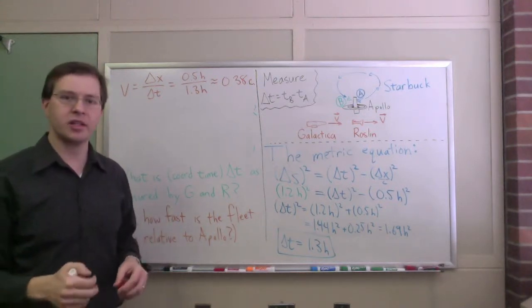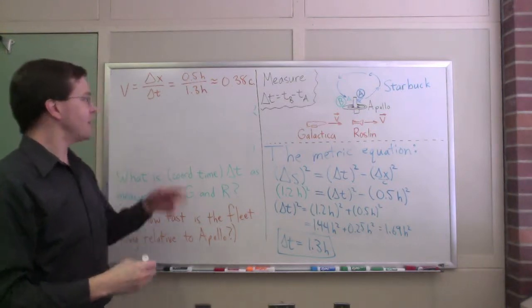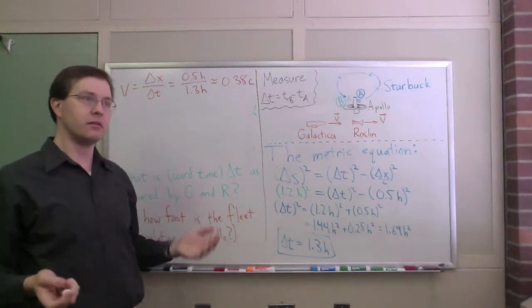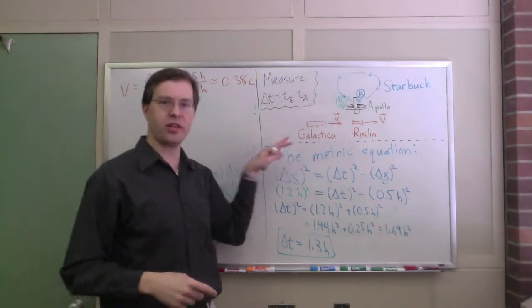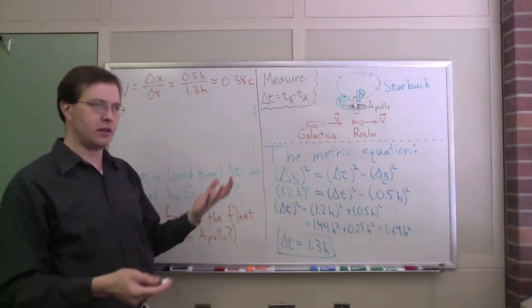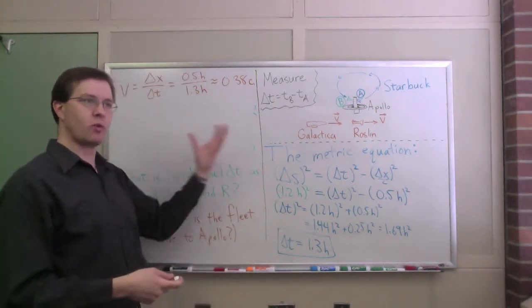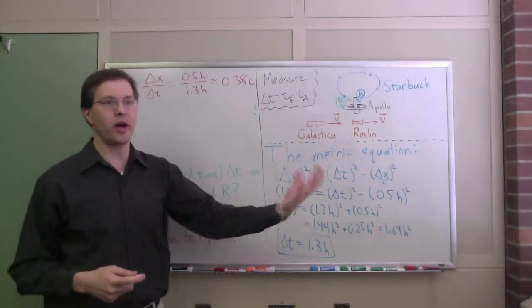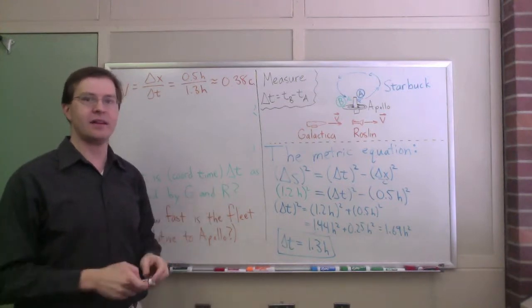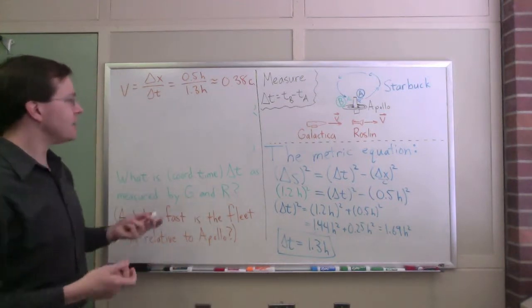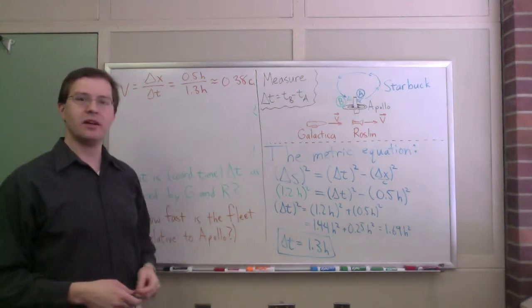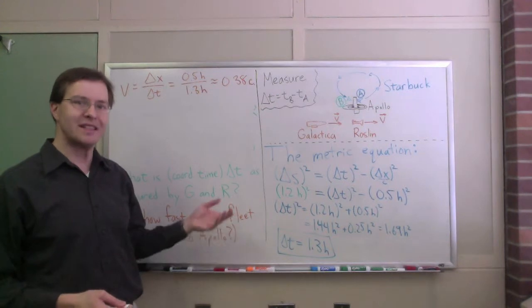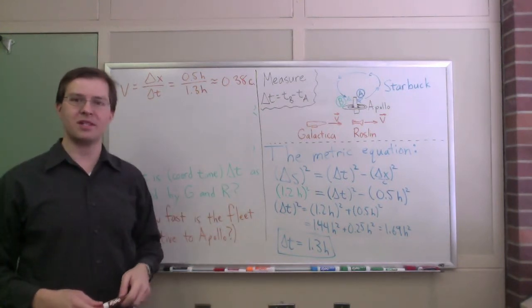So there you have it. It's a calculation. And of course, if that's the speed that the fleet measures the space station swinging by at, then equivalently that must be the speed that Apollo measures the fleet going past at, because those two are, as long as one of them is at rest, you can just swap back and forth between the perspectives that way. So if I see you moving at 0.38c one way, you see me moving at 0.38c the other way. That does work. So okay, there we have it. A use of the metric equation to figure out different perspectives, different reference frames, measurements of the same delta t if we know some missing pieces.